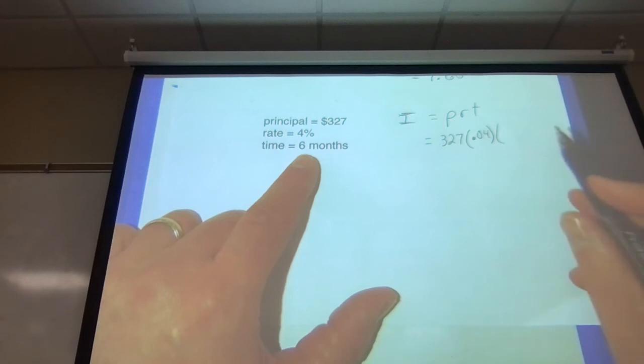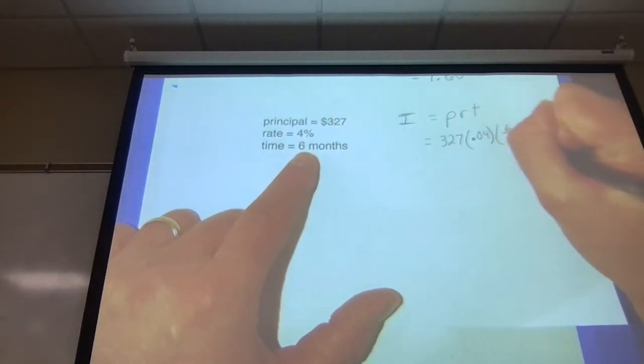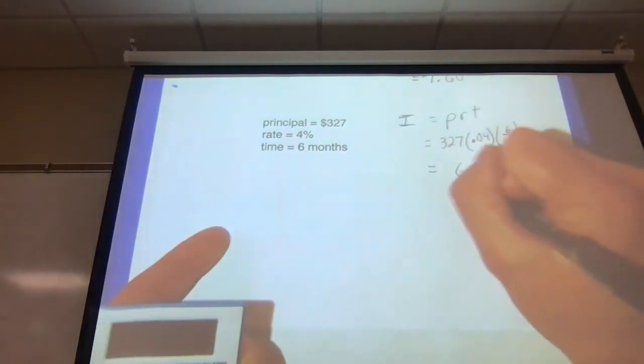T stands for time. You have six months. Time we want in years, so you have to put that 6 as a fraction out of 12. Then you just have to put in the calculator: 327 times 0.04 times 6 divided by 12.